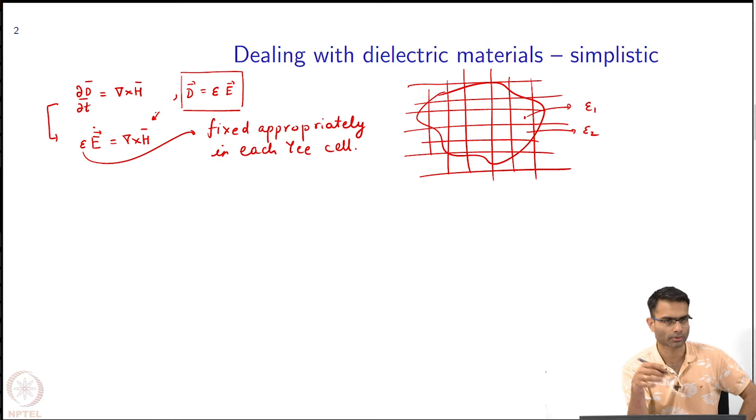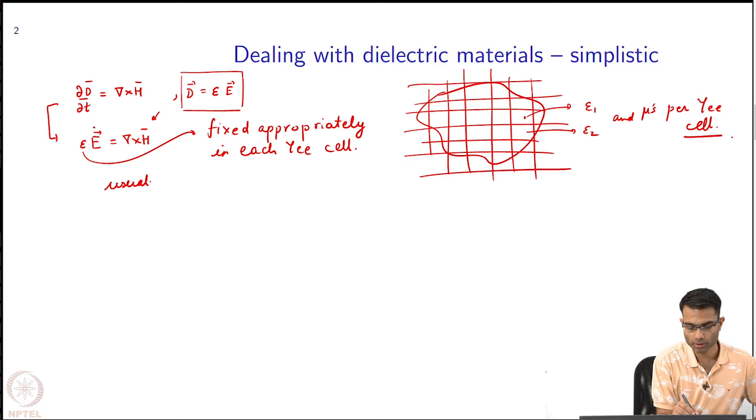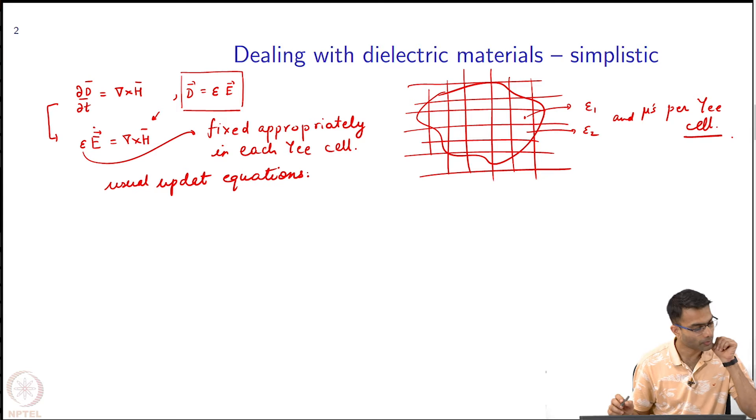On this grid, once I fix the values of epsilon then I use these update equations with the appropriate value of epsilon or mu. I can also replace B is equal to mu H and put those values of mu. Epsilon and mu is per E cell, and usual update equations.